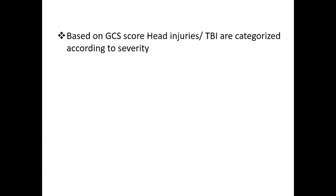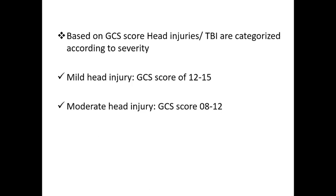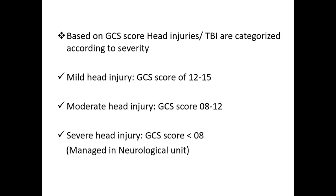Based on GCS score, head injuries are classified by severity: GCS 12–15 is mild traumatic brain injury; GCS 8–12 is moderate head injury; GCS less than 8 is severe head injury. All head injury patients are best managed in a neurological unit, and severe head injury patients with GCS below 8 must always be treated there.